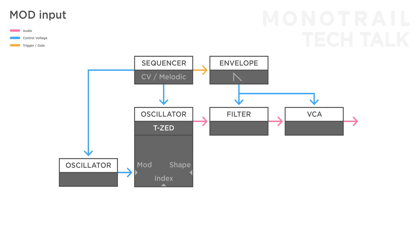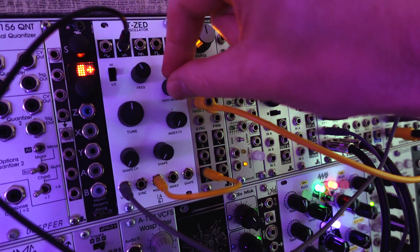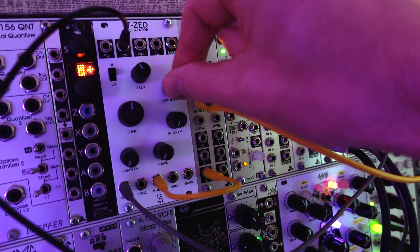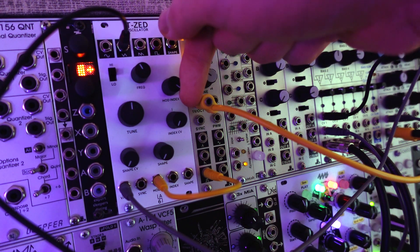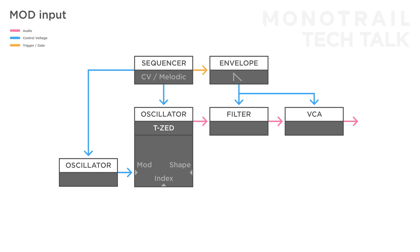A lot of tonal textures can be achieved when the oscillator used to modulate the phase is tuned and sequenced as well. You can multiply the 1V per octave signal going to the TZ and use it to sequence the modulating oscillator. With the TZ offering wave shape modulation, you can easily increase the sonic variations over time — for example by sending a slow LFO or random voltage to the shape input.